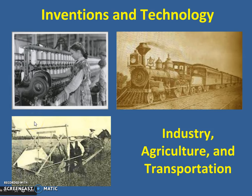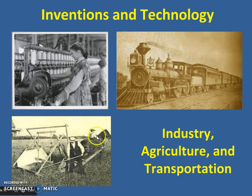In these three pictures, we see a girl who looks to be probably about 12 or 13 years old working at an industrial factory — a textile mill. We also see a farmer and most likely his son using a device called the McCormick Reaper, which we'll learn about. And of course we recognize a traditional old-style railroad, a steam locomotive. We'll talk about the effect of the railroad.